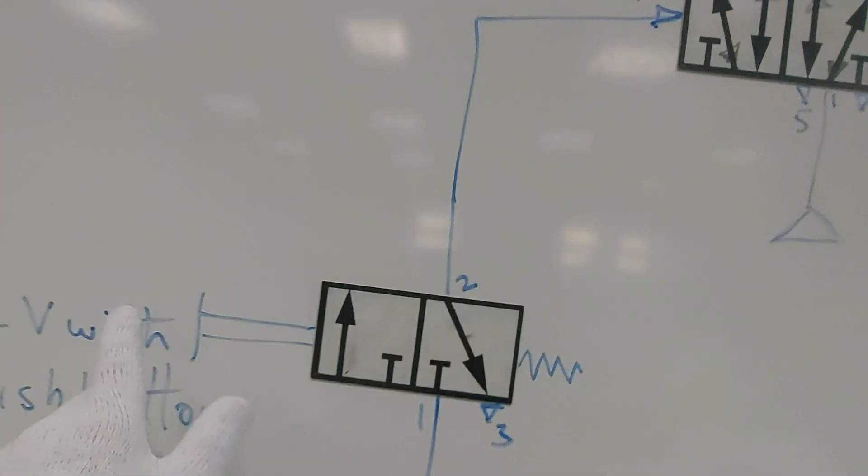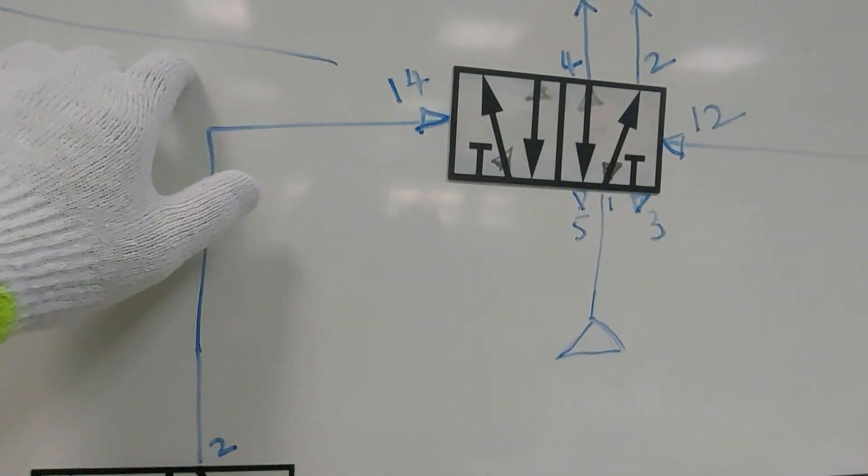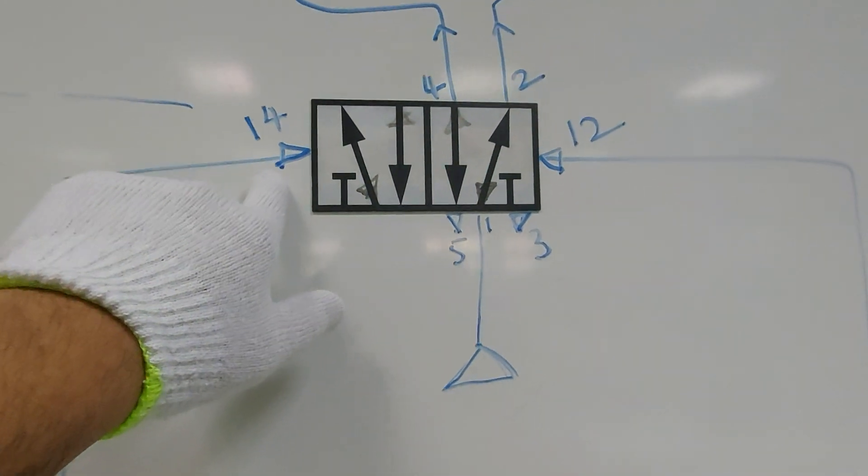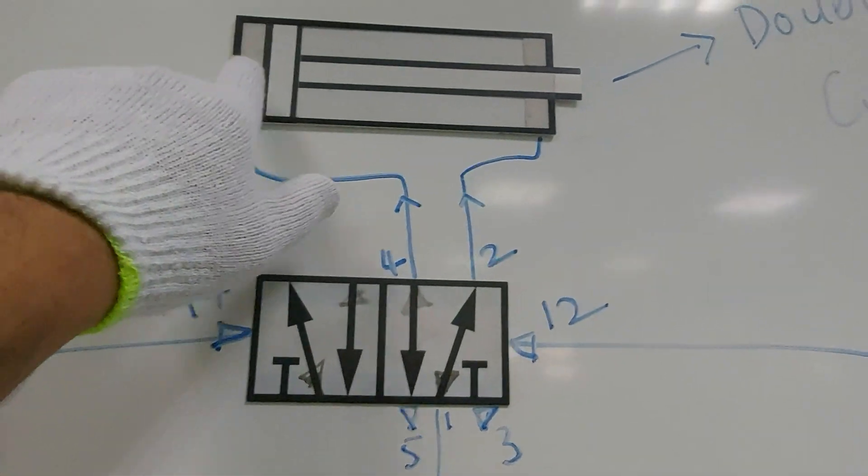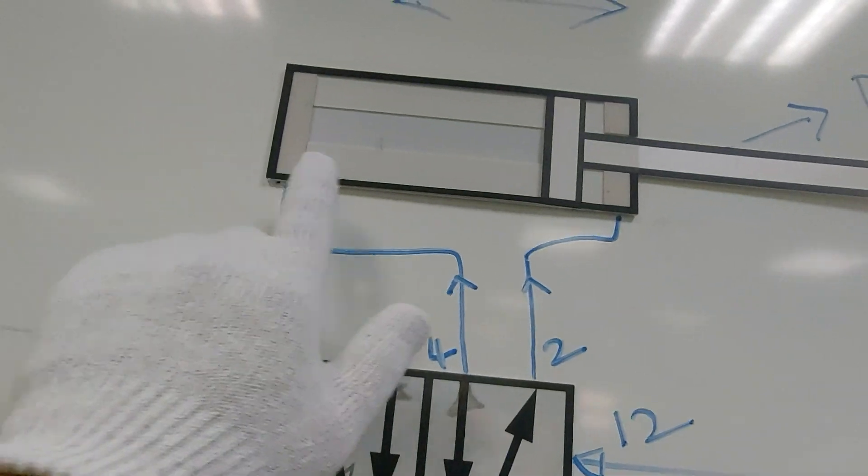Now when you press this one, air will go from here. 1-4. And it will activate the port 4. And the piston will go out.